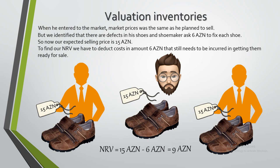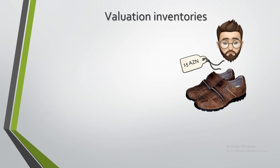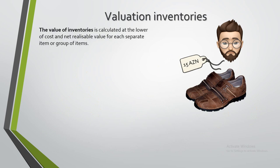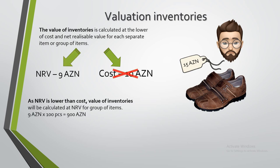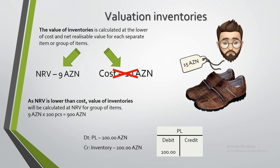Our NRV will be 9 ACN. As we said before, the value of inventory is calculated as the lower of cost and net realizable value for each separate item or group of items. In this case, NRV of 9 ACN is lower than cost of 10 ACN, so we ignore the cost and value inventories at NRV. The decrease in the value of inventory of 1 ACN per item should be recorded as a deduction in the profit and loss statement.